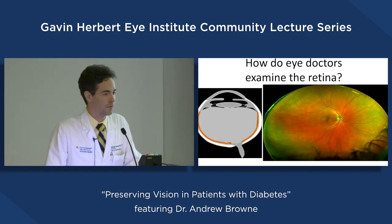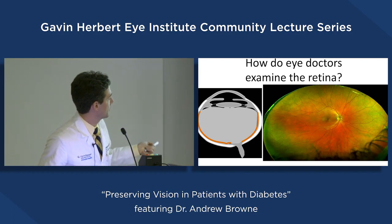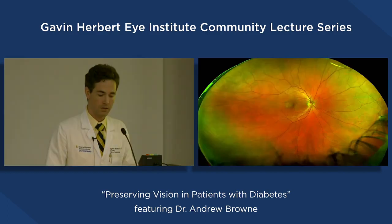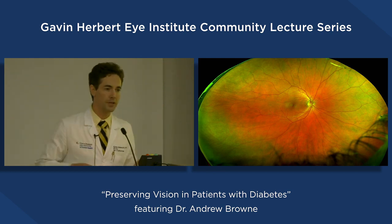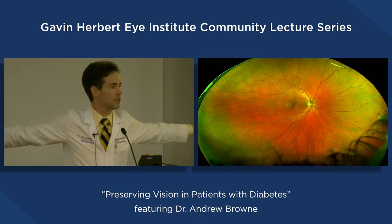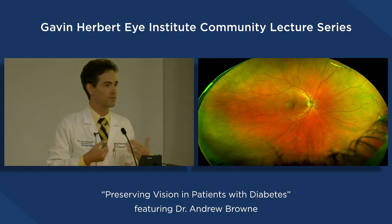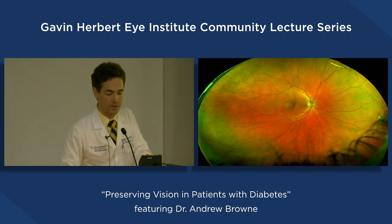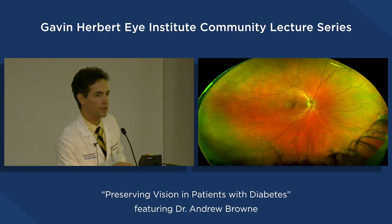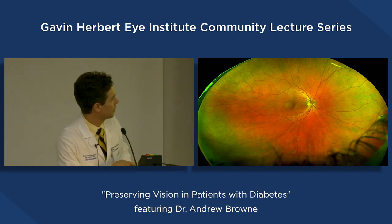The retina is a paper-thin film in the back of the eye. We can take a wide-field photograph covering 200 degrees using a sophisticated camera. The optic nerve connects the eye to the brain. The fovea is the central part you're all looking with right now. All information from the peripheral retina, macula, and fovea is sent through the optic nerve back to the brain — that's how we see.